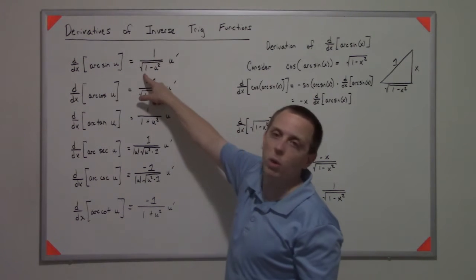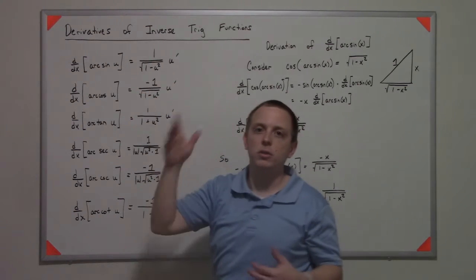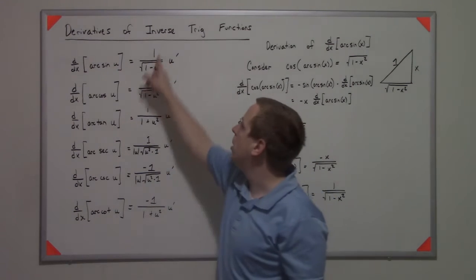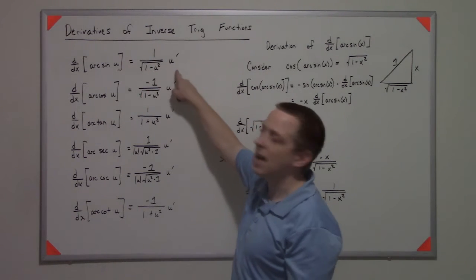If this was arc sine of x, it would just be 1 over the square root of 1 minus x squared. But in the case where it's some extra function, the chain rule says it's 1 over the square root of 1 minus that something squared times the derivative of the something.